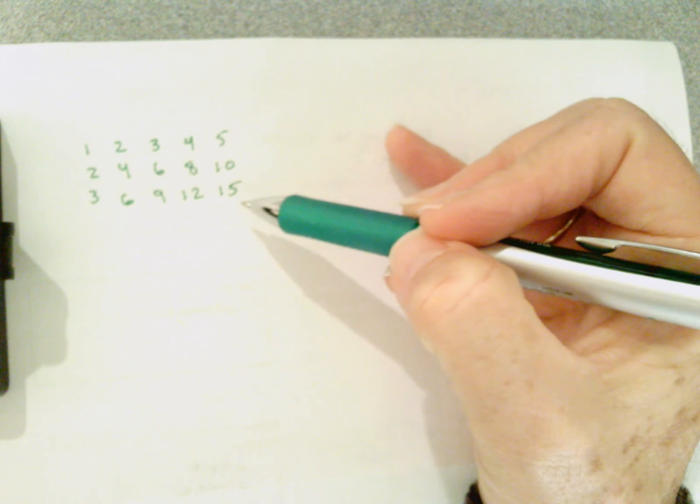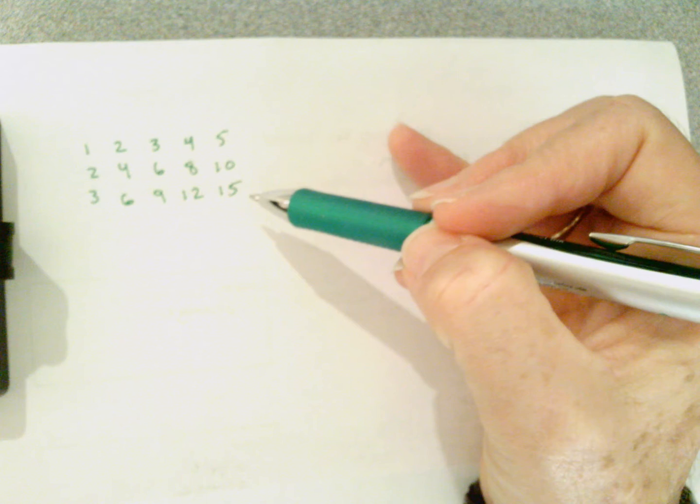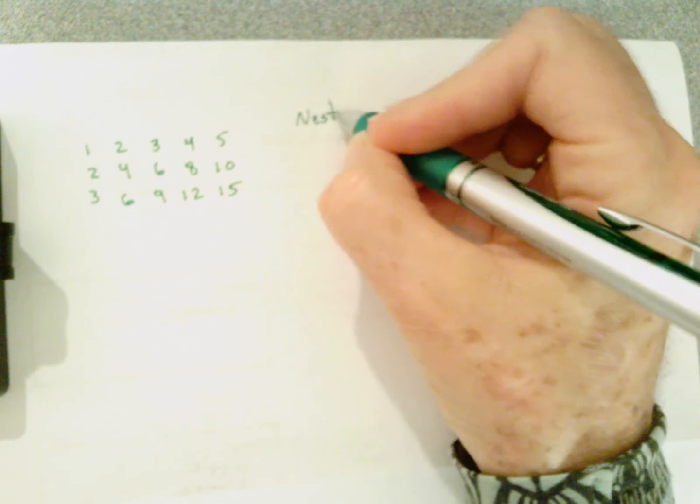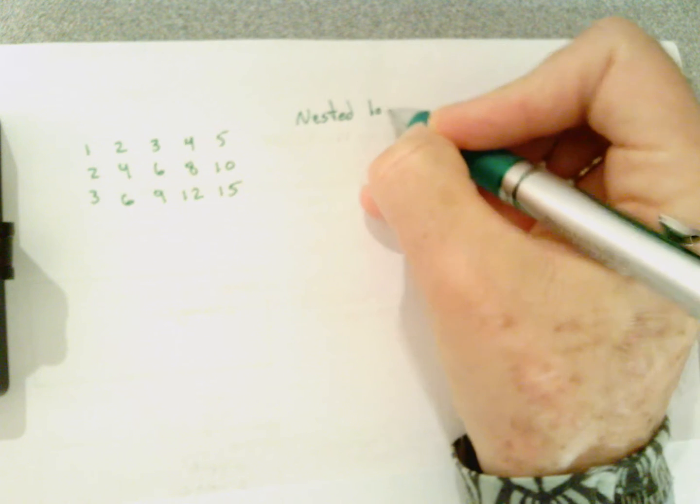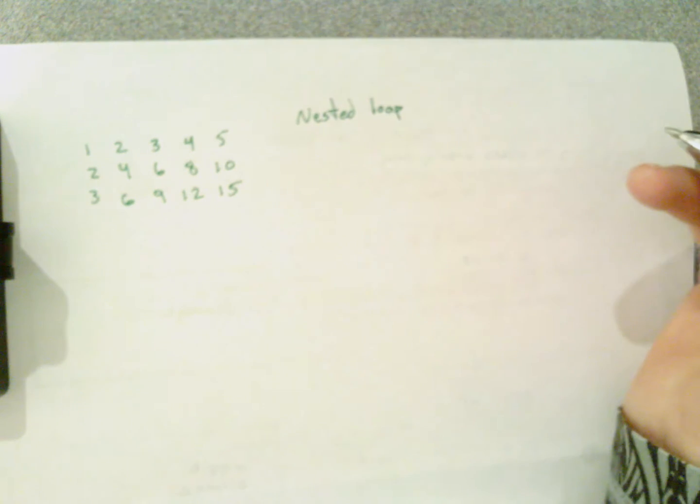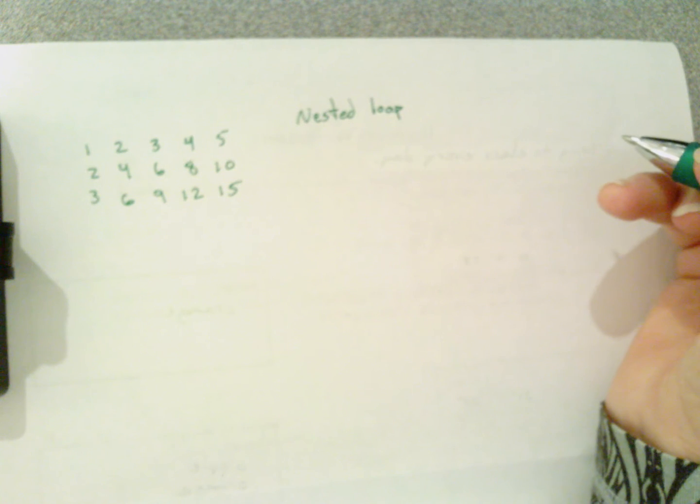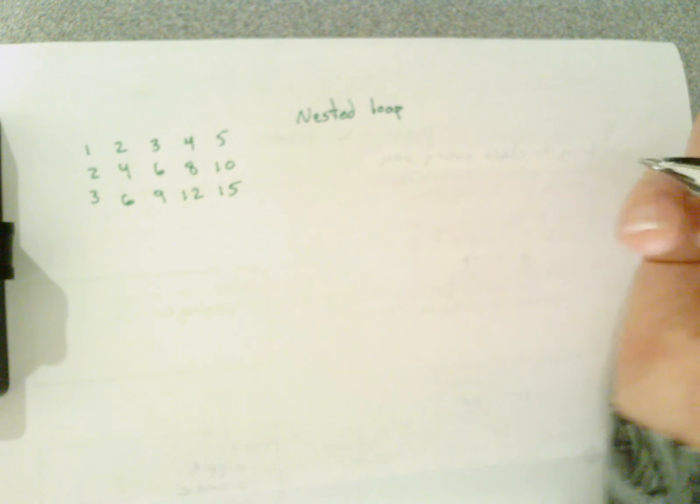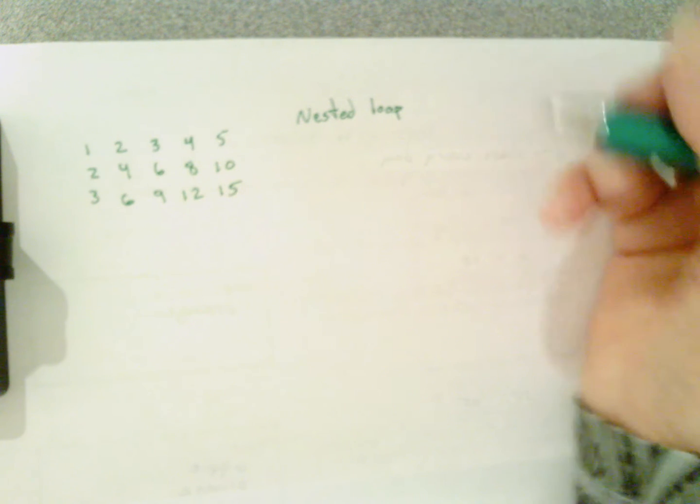We need to use a nested loop. A nested loop is a loop inside a loop, and because we know how many times we want to loop for each loop, we should use a count controlled loop. The best one for that is a for loop in Java.